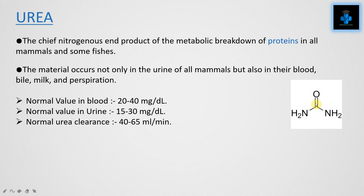The normal value of urea in blood is 20 to 40 mg per dL. The normal value in urine is 15 to 30 mg per deciliter. The normal urea clearance is 40 to 65 mL per minute. The volume of blood cleared of urea per minute by the kidney is known as the urea clearance.